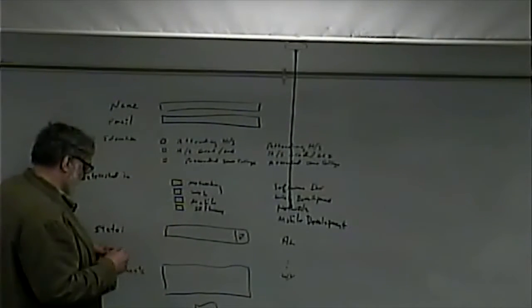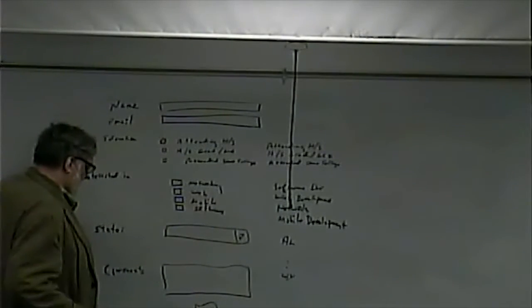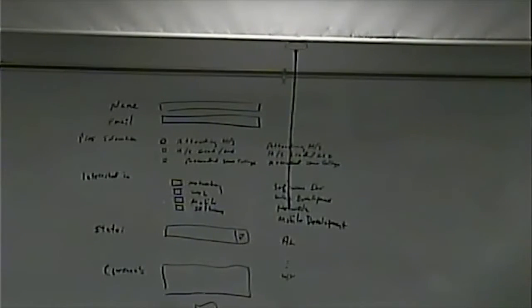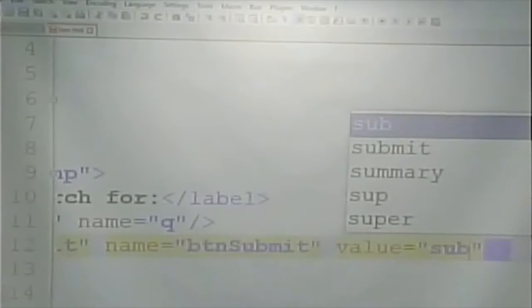We're going to build this form, keeping in mind we don't have a server-side script to process it, so we'll only build the HTML form side. We won't be able to test it end-to-end, but we'll build the form structure. I'm going to put in a dummy name — process.php — that doesn't exist, so we'll get an error on submit, but we can still set up the form.